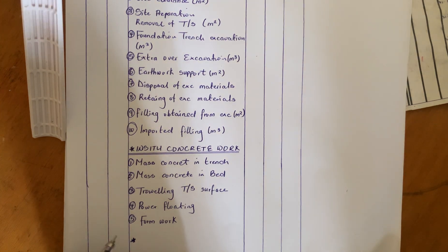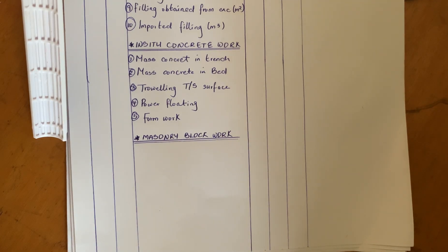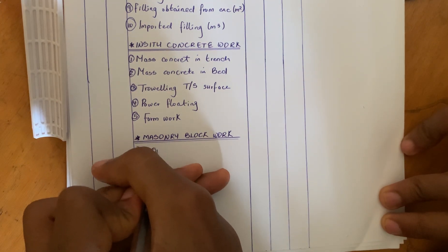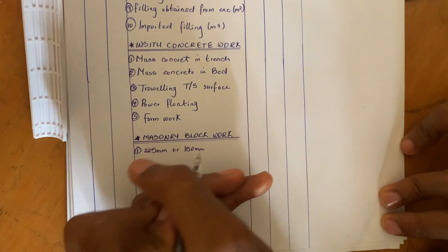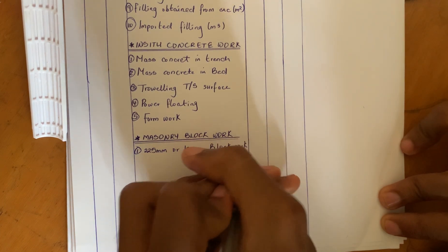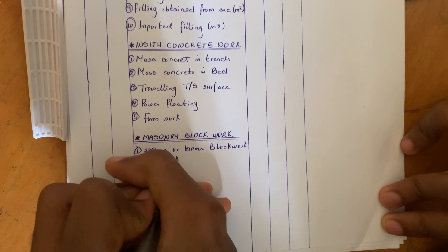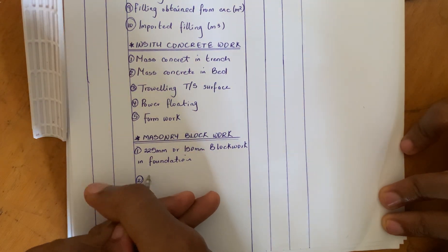Next and last would be masonry block work. In masonry block work there are only two items to be booked: first is 225 mm or 150 mm block work in foundation, depending on the size being used; and second would be damp proof course.